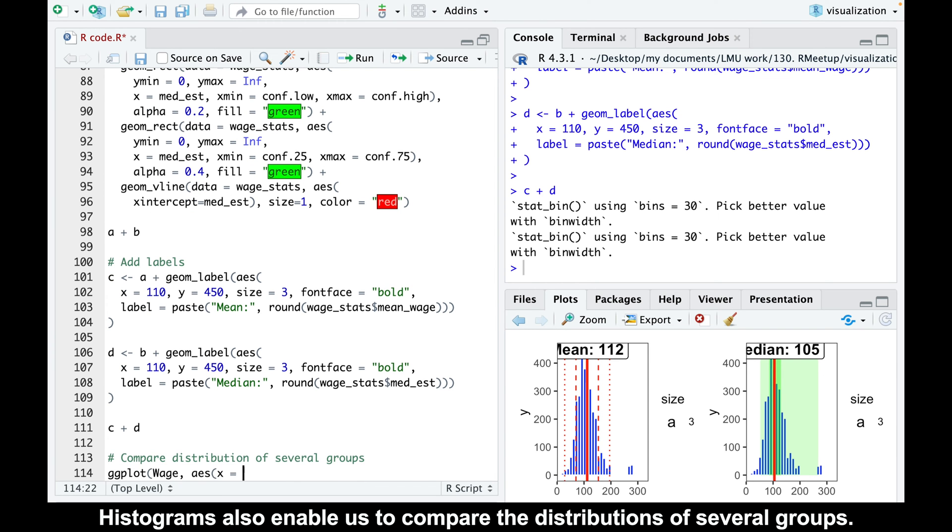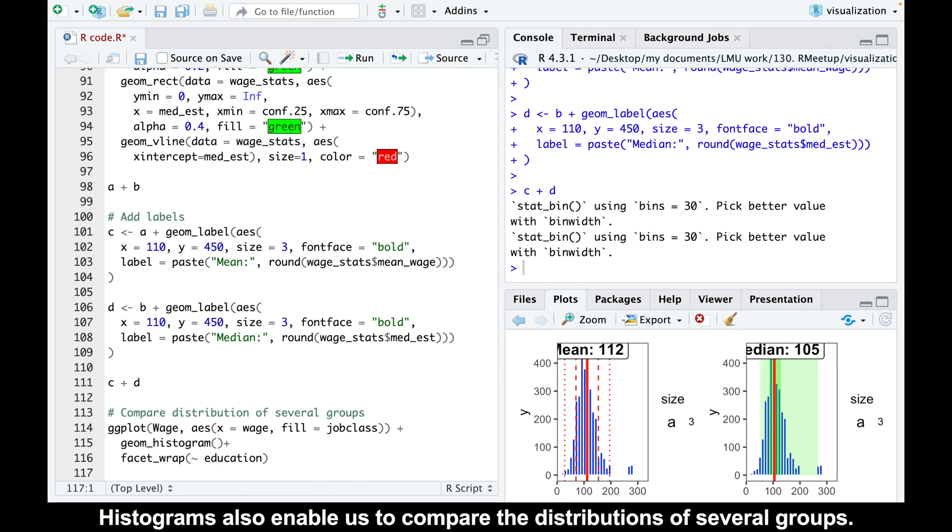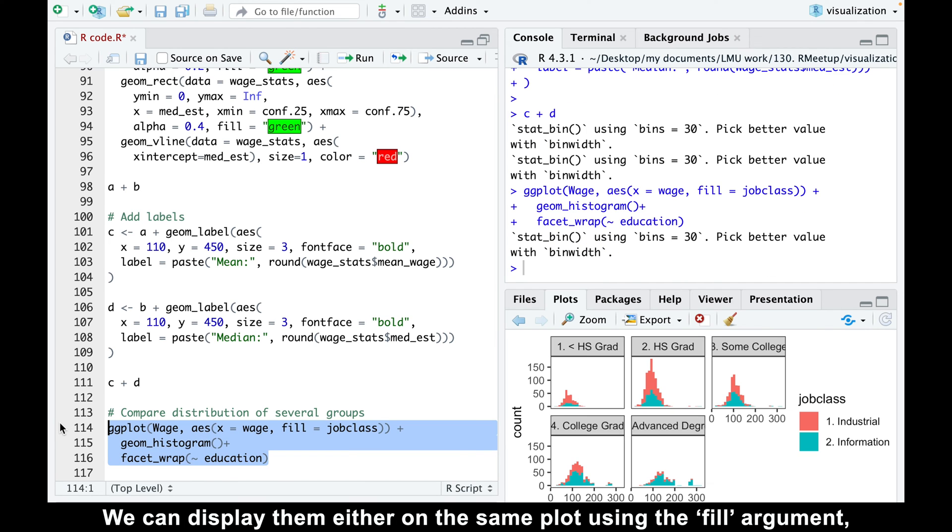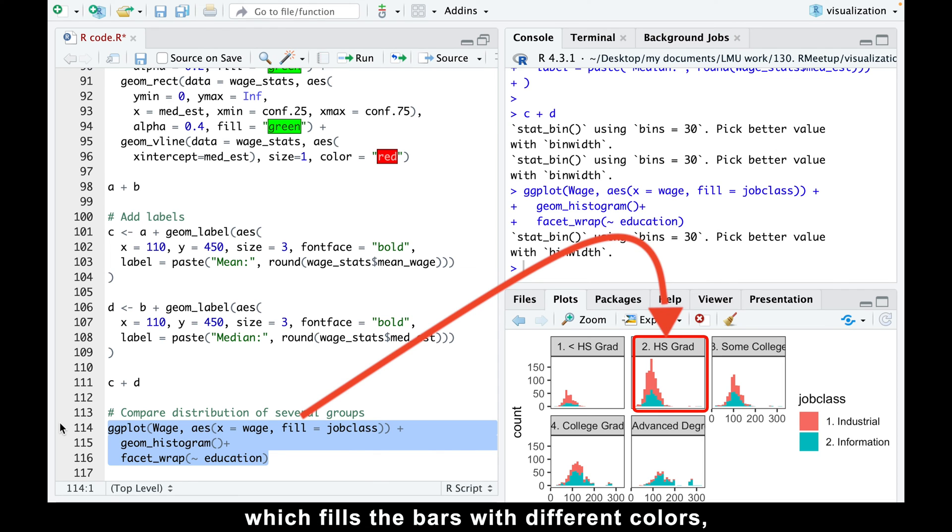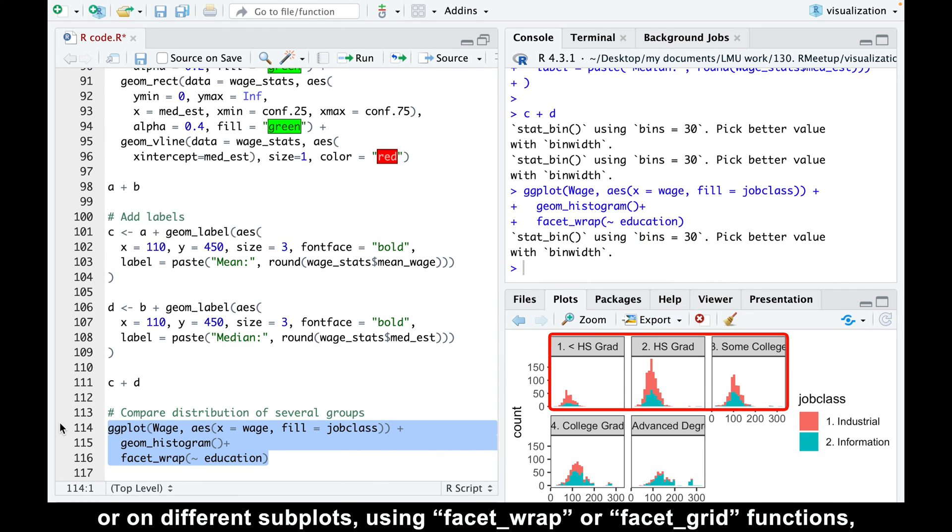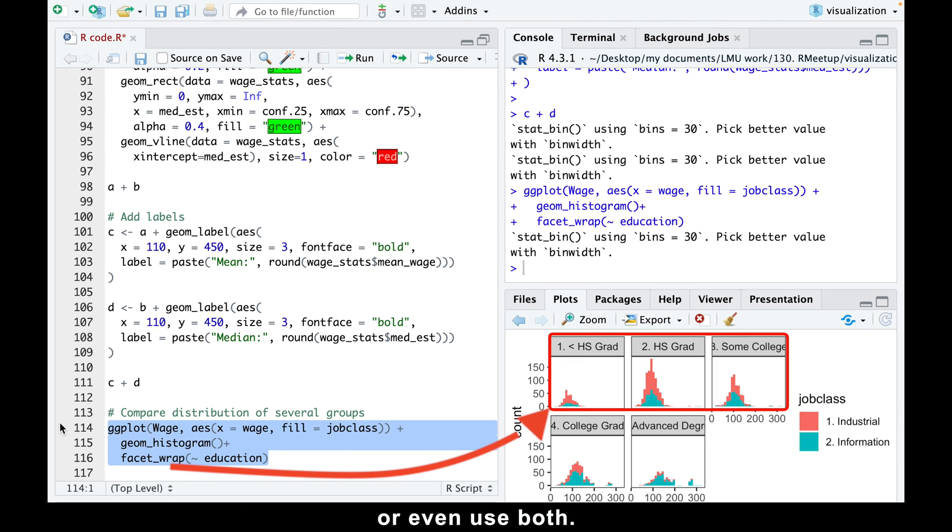Histograms also enable us to compare the distributions of several groups. We can display them either on the same plot using the fill argument, which fills the bars with different colors, or on different subplots using facet_wrap or facet_grid functions, or even use both.